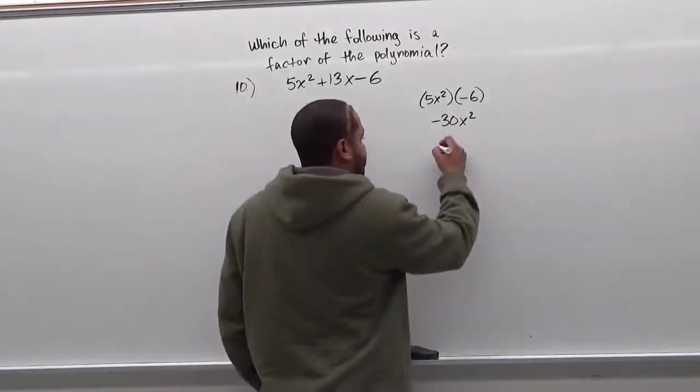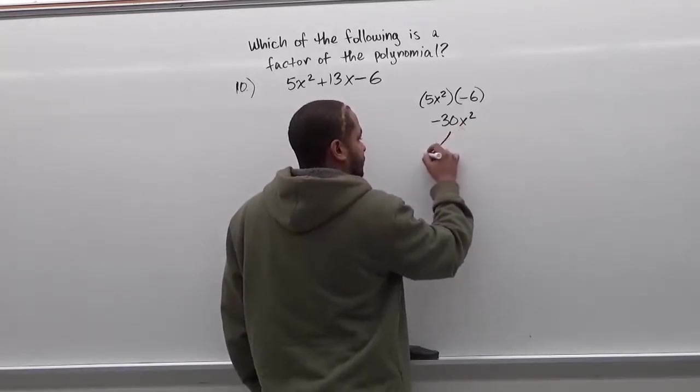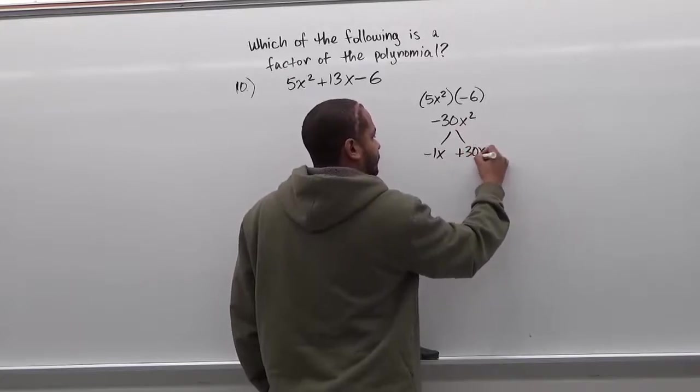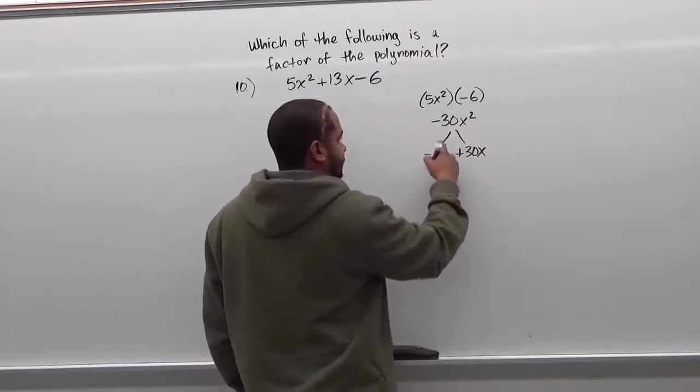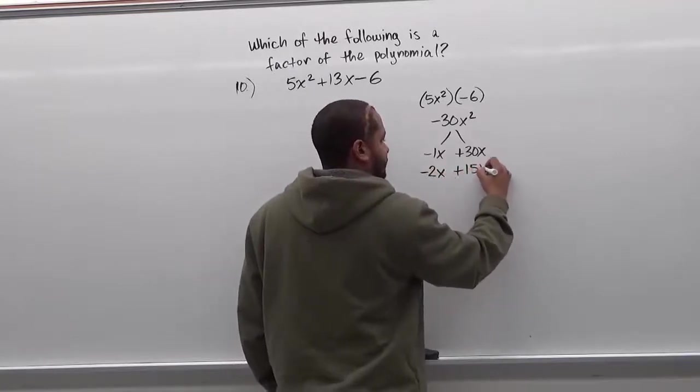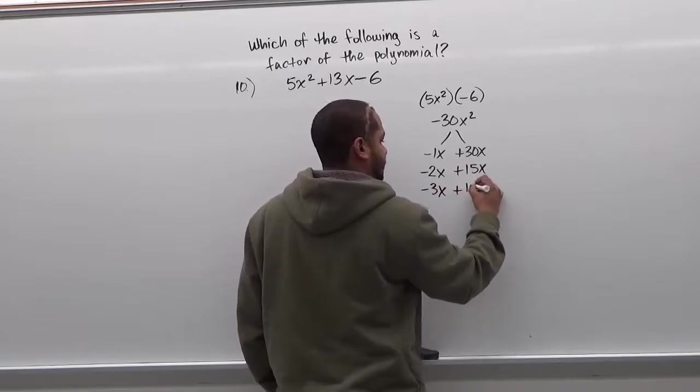So here our first factor on this list of factors is going to be negative 1x and positive 30x. Our second factor for negative 30 is negative 2x plus 15x. Our third, negative 3x plus 10x.